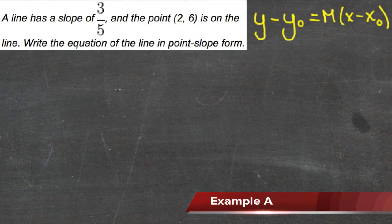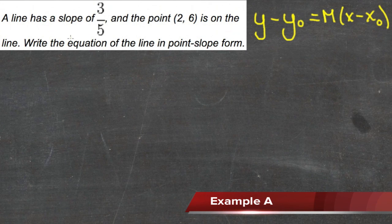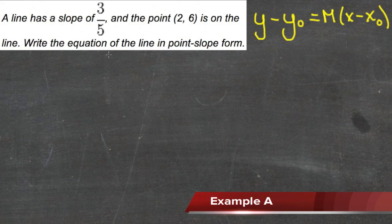This question is really more or less just an example of how the pieces of an equation fit into the point-slope form of a linear equation. The question says the line has a slope of 3/5 and the point (2, 6) is on the line and we need to write the equation of the line in point-slope form.